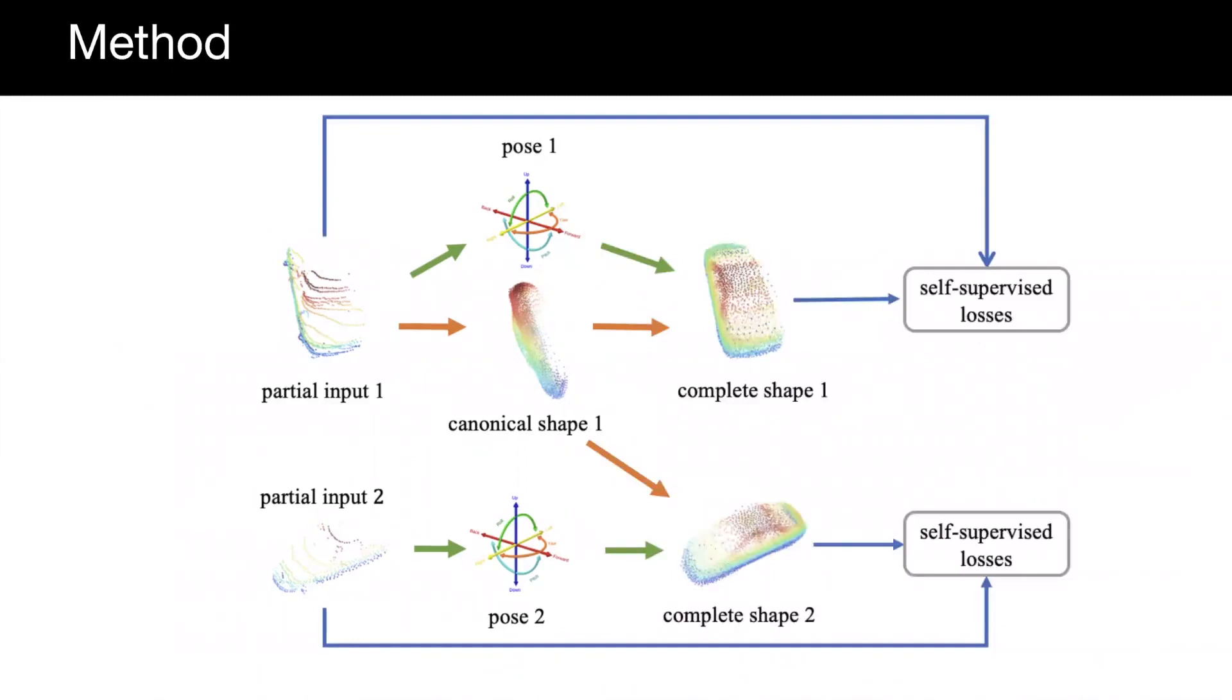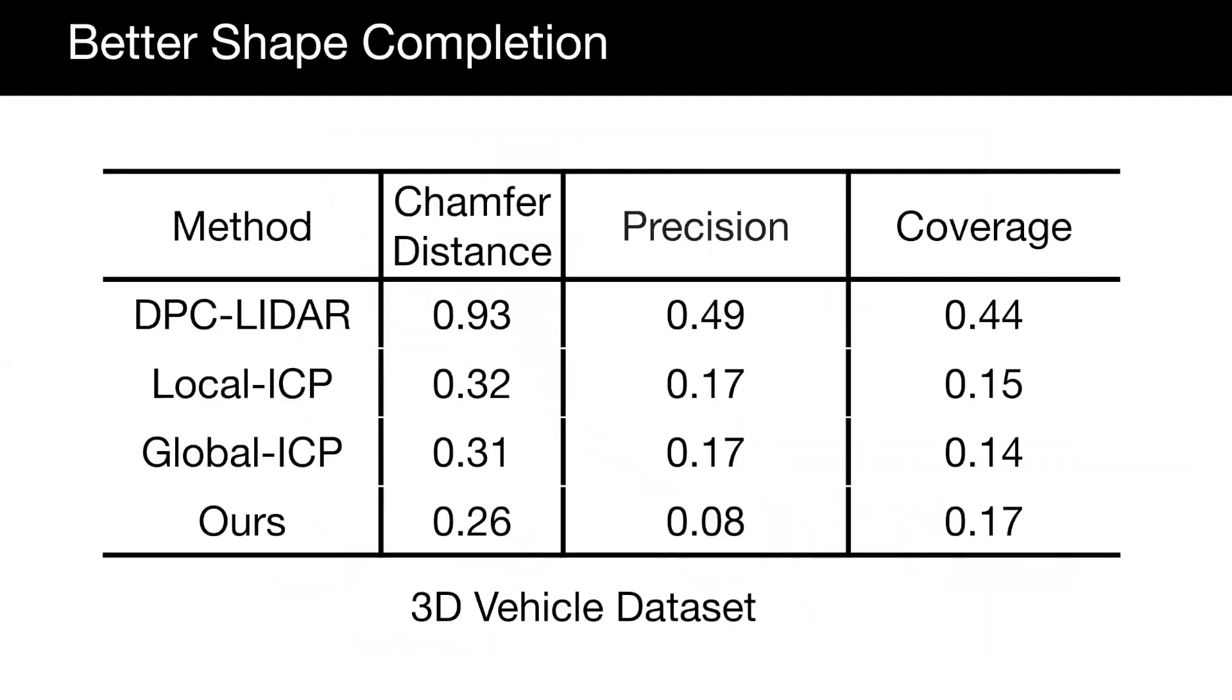We design self-supervised losses to match multiple input views with complete shapes and their projections. Compared to baselines, we show better shape completion results on in-the-wild real data.